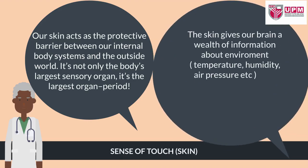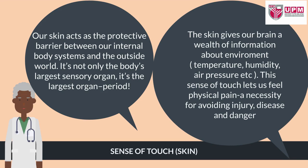Sense of touching. Our skin acts as the protective barrier between our internal body systems and the outside world. It's not only the body's largest sensory organ, it's the largest organ period. The skin gives our brain a wealth of information about the environment: temperature, humidity, and air pressure. This sense of touch lets us feel physical pain and the necessity for avoiding injury, disease, and danger.